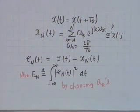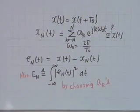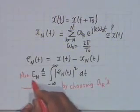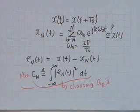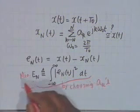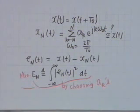Do you understand the problem? Given a periodic function, can we approximate it by a finite series of the form of Fourier series? The Fourier series is infinite, so we take a finite series and ask: what values of a_k should we choose so that the squared integrated error — which is our criterion — is minimized? For what values of a_k is E_N a minimum?